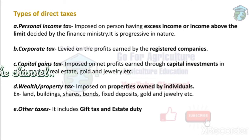Next is capital gains tax. Sometimes we invest money in things like the stock market, real estate, gold, or jewelry. Capital gains tax is applied to the profit earned through these kinds of investments.